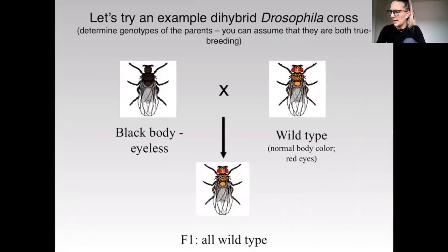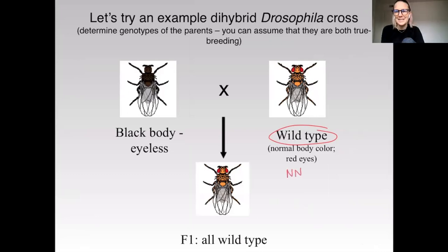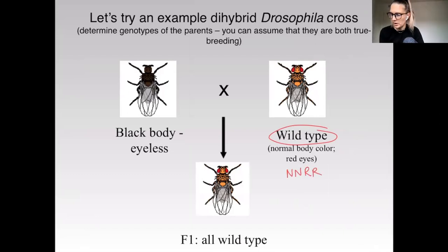So let's try an example. We're going to look at a dihybrid cross, and your job first is to determine the genotypes of the parents, and you can assume both are true breeding. We have what is called a wild type fly — that means normal body color and normal red eyes. If it's true breeding, we're going to say that normal body is homozygous dominant, and the eyes are going to be red, also homozygous dominant. And the black body eyeless, because they have the recessive phenotype, those are going to be homozygous recessive for both.